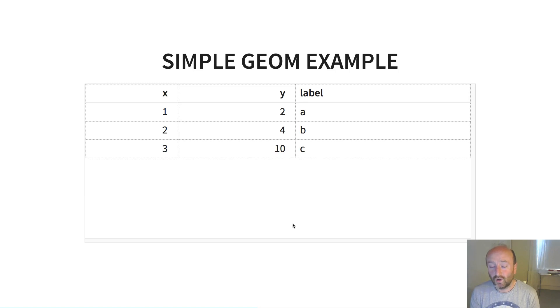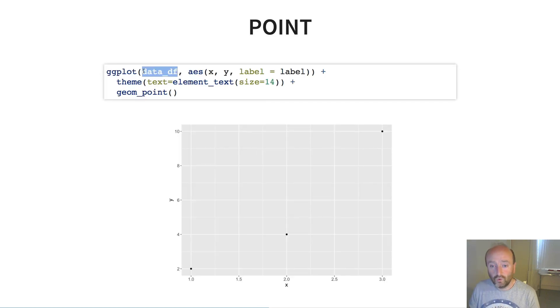To illustrate what geoms are, I want to provide a really simple example that I've borrowed from the ggplot2 book. So imagine that I've got this dataset that looks like this. I've got an x variable, I've got a y variable, and I've got a label for each of those different rows for each of the different data points. So how can I visualize these data? So here, imagine that I've called my data, I've called that object a data frame that I'm calling data_df. So that's the first argument to the ggplot command. And then I've got an aesthetic where the first element is the x variable, which gets plotted on the horizontal axis, and then the y variable, which gets plotted on the y axis. And then here, I've also added another aesthetic, which is label.